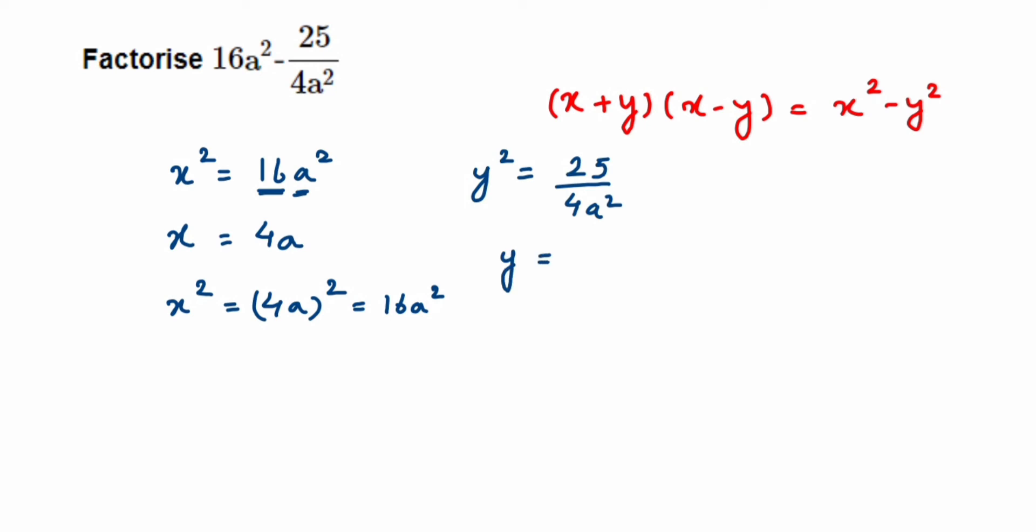You can cross-check by opening the bracket. That is, y² will equal (5 upon 2a) whole square, so 5 square is 25.